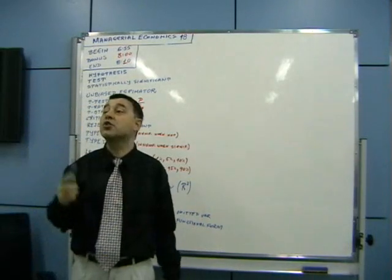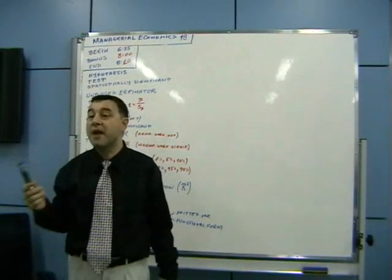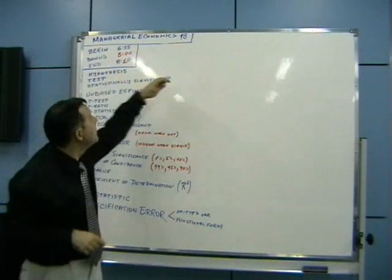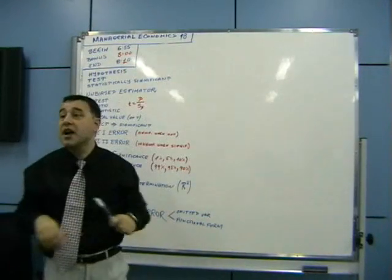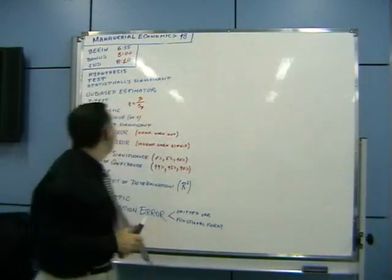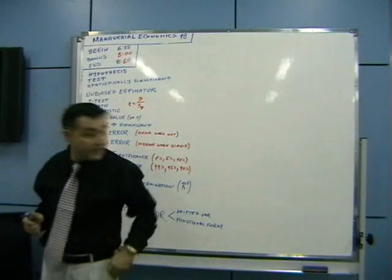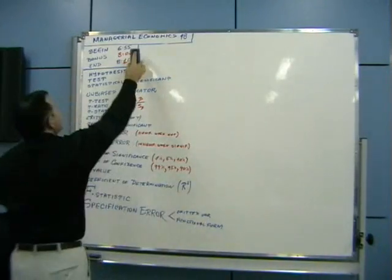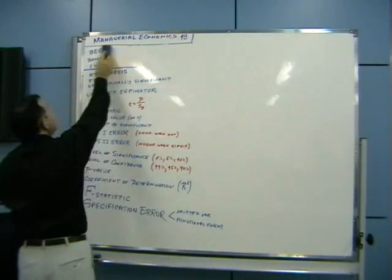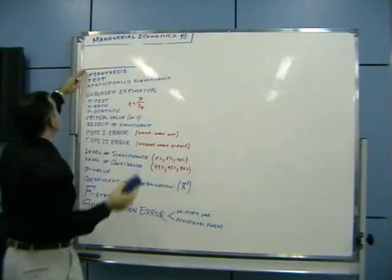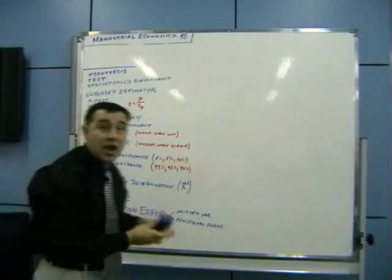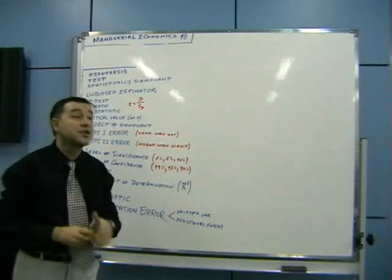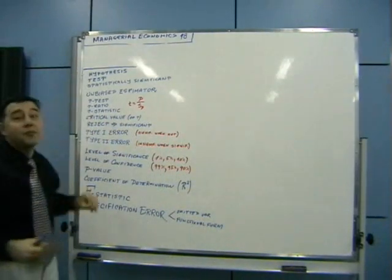This is our last lecture on quantitative methods, specifically statistics and econometrics. This is lecture 18, and I have outlined the concepts I will be trying to cover in the next 30-40 minutes.